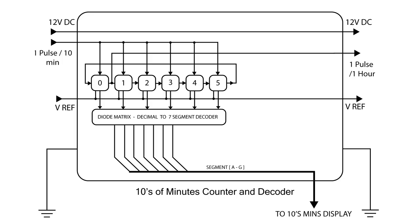The tens of minutes counter is the simplest counter board in the clock. It counts from 0 to 5 in 6 steps. It counts directly in decimal and uses a diode matrix to map the output to the LED 7 segment display. We'll go into painful detail on the next one, so don't worry, you'll get there.